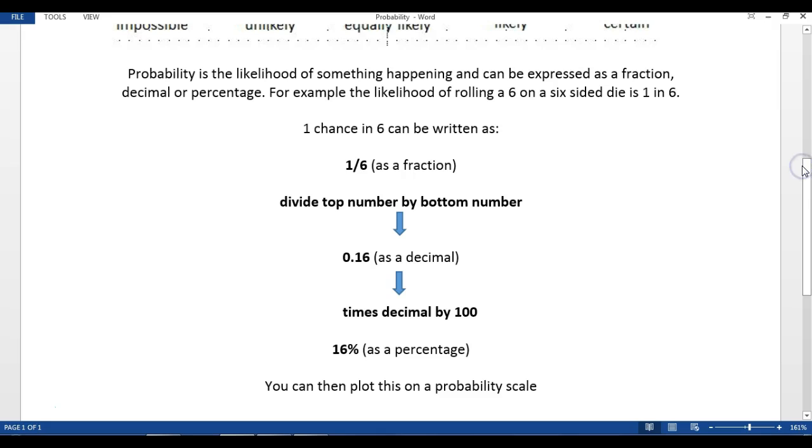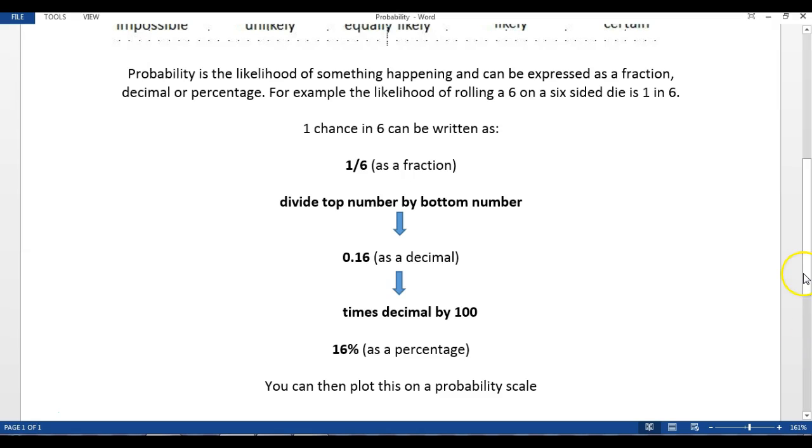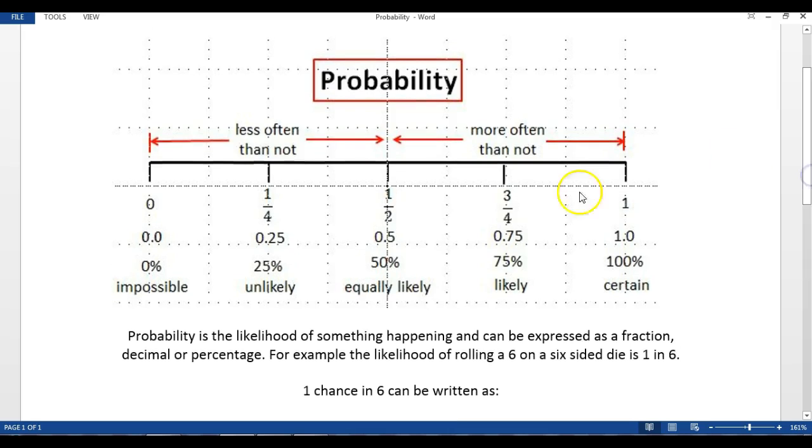To get that number then as a percentage, you can times the decimal by 100 and that will give you that as a percentage. So if you go back to my calculator and times that by 100, you can see it's around about 16%.